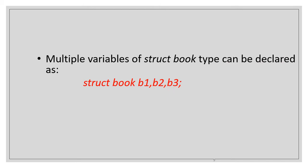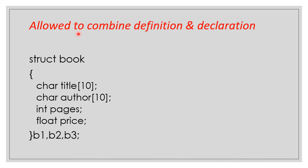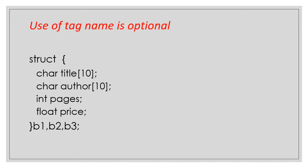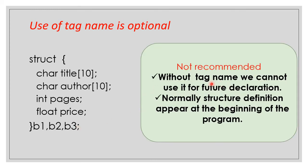If you need to declare a structure, you can combine the definition of a structure and the declaration together. You define the struct book with its members, and then declare variables at the same statement. You can also avoid the tag name, declaring only variables — but this is not much recommended.